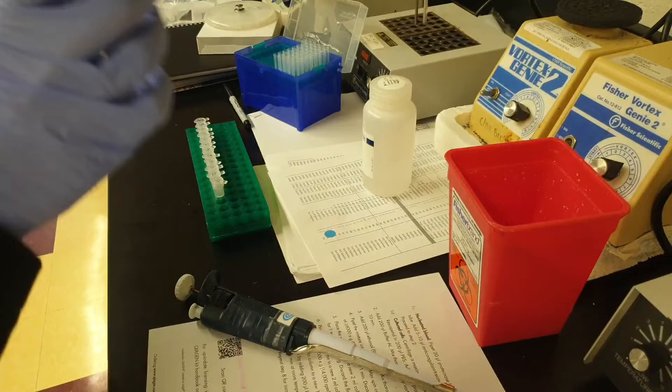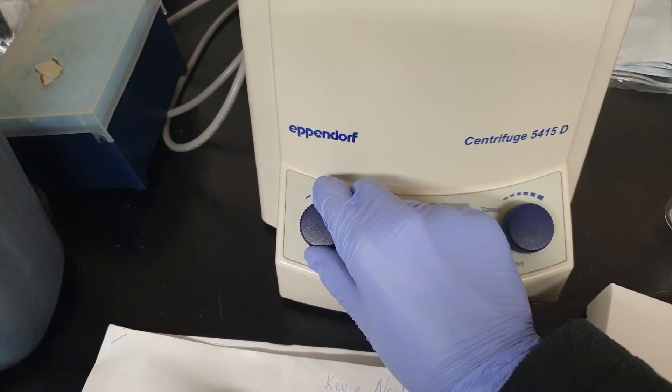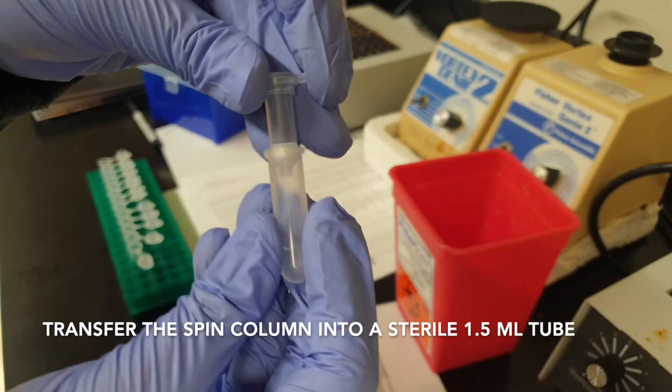Again, 500 microliters. But this time, you're going to do 14,000 rpm for 3 minutes. My centrifuge's maximum setting is 13,200, so instead of doing 3 minutes, I did 4 minutes.